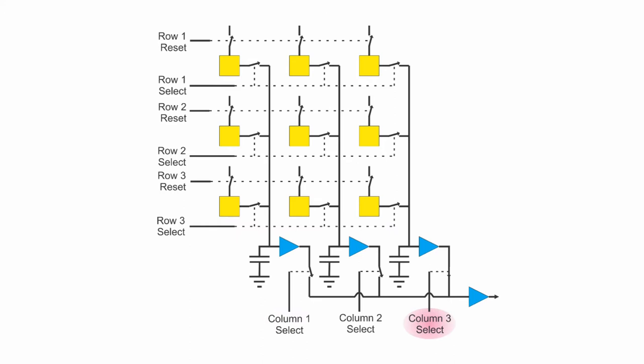After the first row is read out, the outputs from the second row are selected, transferring them to the row readout. The second row is reset and begins a new exposure. This process continues until the entire image sensor is read out, at which time the first row is ready to be read out again.